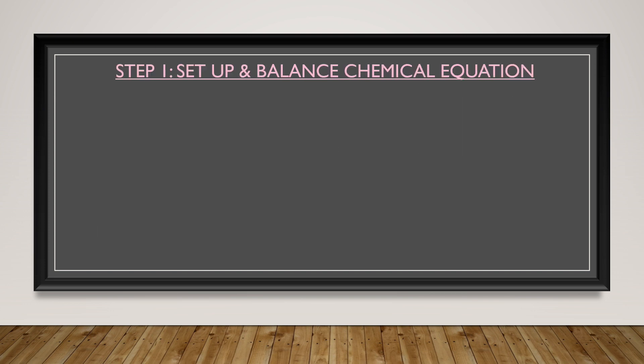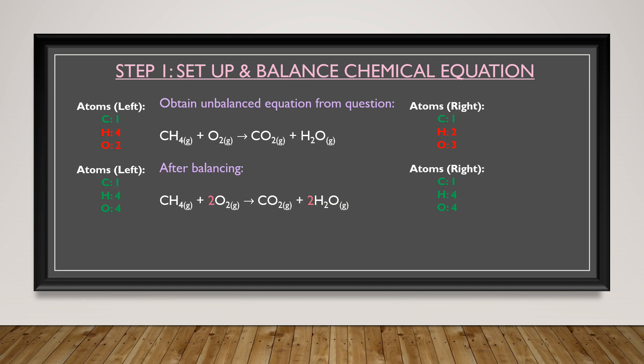So, first, we write out the unbalanced equation as obtained from the question. For any chemical equation like this, the atoms on the left side must equal the atoms on the right side, and in this case, they are not. So, by balancing the molecules, we can equalize the atoms on the left and right sides of the chemical equation to obtain a balanced equation.